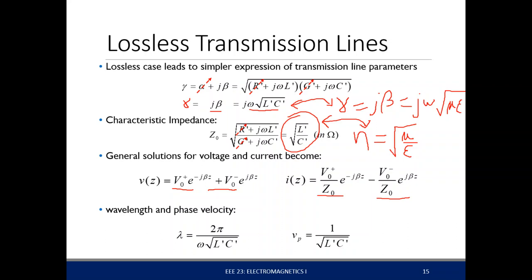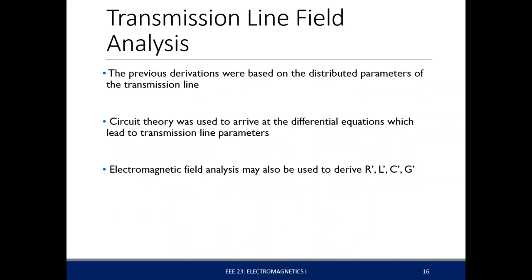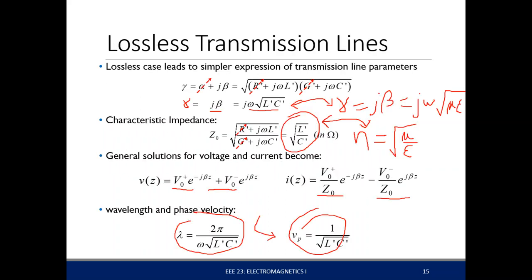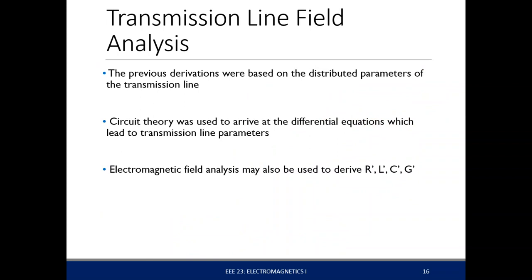Transmission line propagation is actually similar to plane wave propagation. The wavelength and phase velocity follow the same equations. To get R', L', G', and C' within a transmission line, you have to look at the electric and magnetic fields. The previous derivation was based on lumped components, but using electromagnetic fields we can derive the transmission line parameters R', L', G', and C' — which is what you have been doing for the past semester.